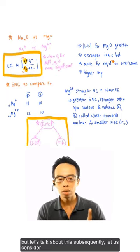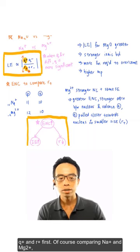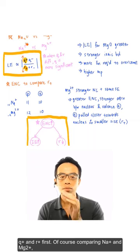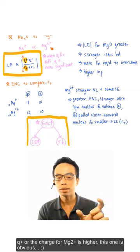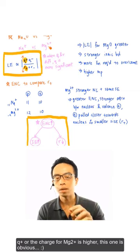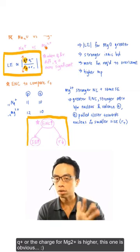But let's talk about this subsequently. Let us consider Q+ and R+. Of course, comparing Na+ and Mg2+, the charge for Mg2+ is higher. This one is obvious.